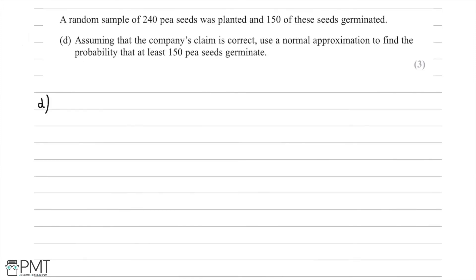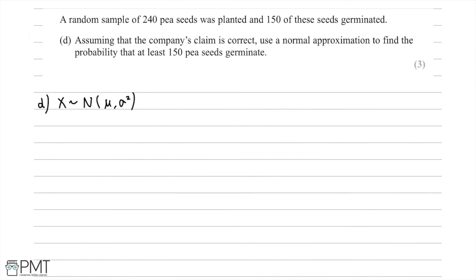For part D we're given further information: a random sample of 240 pea seeds was planted and 150 of these germinated. Assuming the company's claim of 55% is correct, we use a normal approximation to find the probability that at least 150 pea seeds germinate. We let X be the random variable for the number of seeds which germinate, following a normal distribution with mean mu and variance sigma squared.